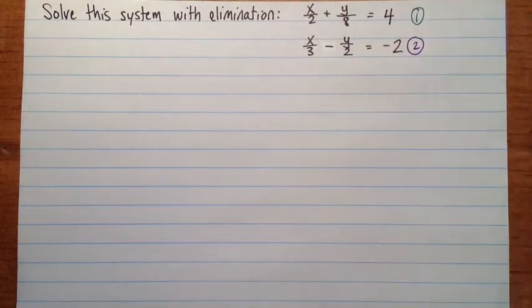Actually the first thing I'm going to do is get rid of the fractions, and from that point it'll just be a regular system that we're solving with elimination. Now we get rid of the fractions the same way as we would have if we had intended to solve this with substitution. We're going to multiply each equation by its lowest common denominator.